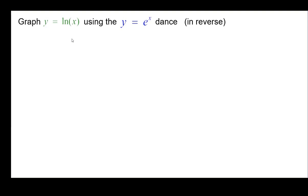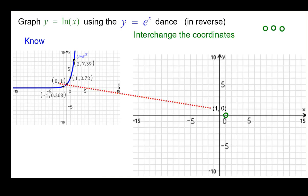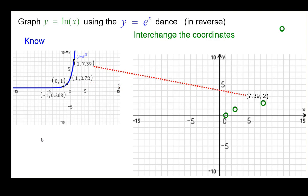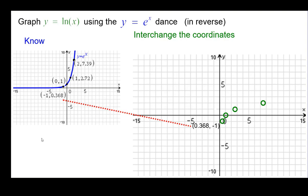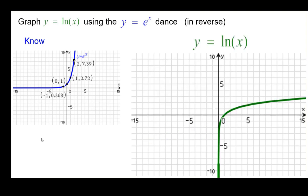We're going to graph the natural log using the exponential function dance in reverse. We know these points — interchanging the coordinates. I usually like to start with the intercepts: (0, 1) goes to (1, 0); (1, e) goes to (e, 1); (2, e squared) goes to (e squared, 2); and then the reciprocal of e. So those are our four key points. We can go ahead and connect the points and make it look like the graph of y equals natural log of x.